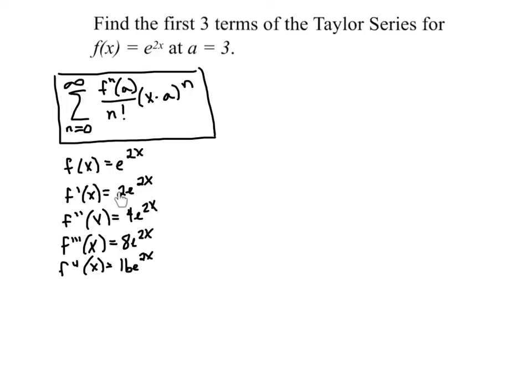Maybe you'll start to see a pattern here in that coefficient. For example, this is 2 to the 1st, 2 squared, 2 cubed, 2 to the 4th. Power of 2 seems to go right along with what derivative I'm on.